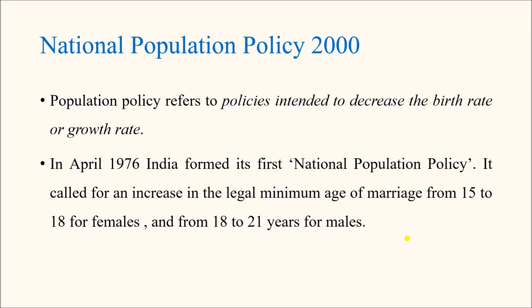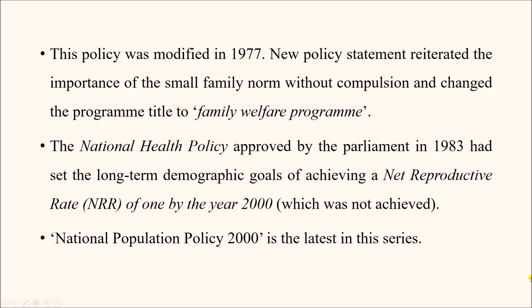Next, we will talk about the National Population Policy 2000. A population policy is any policy intended to decrease the birth rate or growth rate — that is, birth rate minus death rate — controlling how fast the population of a country is increasing. The first population policy in India was formed in 1976. It increased the minimum legal age of marriage: for girls from 15 to 18 years, and for boys from 18 to 21 years.